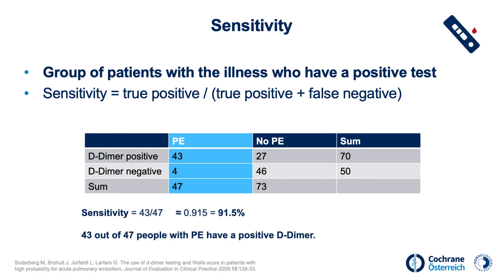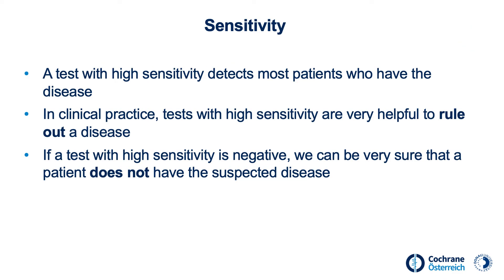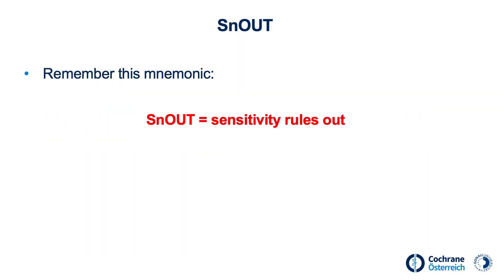In our example, in a study assessing the D-dimer test, 43 out of 47 people were correctly diagnosed with pulmonary embolism through the D-dimer rapid test, resulting in a 91.5% sensitivity. From a clinical perspective, a test with high sensitivity detects most patients who have the disease, making it very useful to rule out a disease. If such a test is negative, we can be sure that a patient does not have the suspected disease. Remember this mnemonic: SNOUT — Sensitivity rules out.